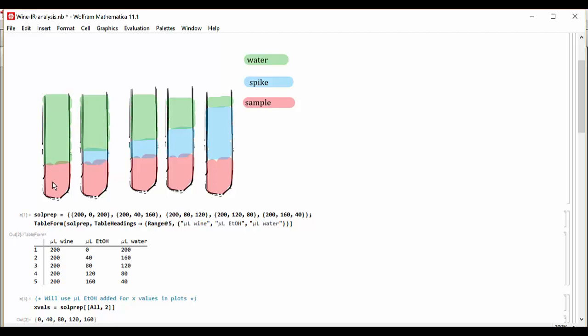In this case, I start off with one that doesn't have any ethanol added, then 40, 80, 120, and 160 microliters, and then top those off with water in order to get to the same constant volume so that the sample has been diluted to the same amount in each case.